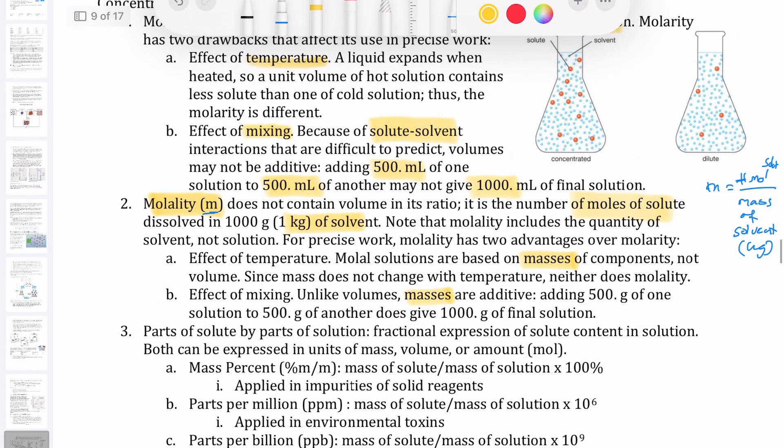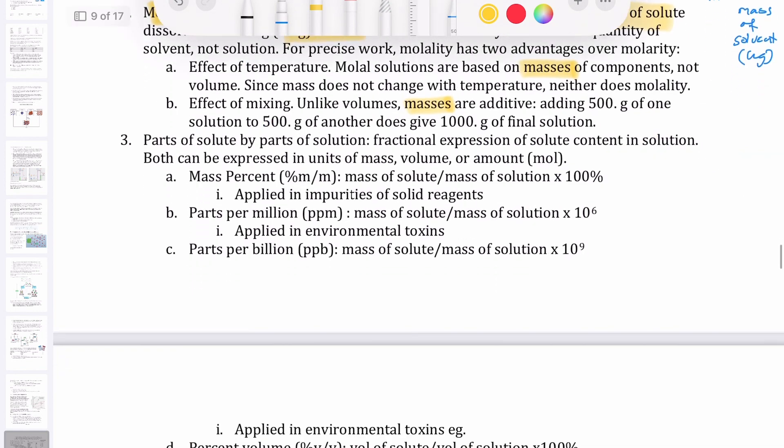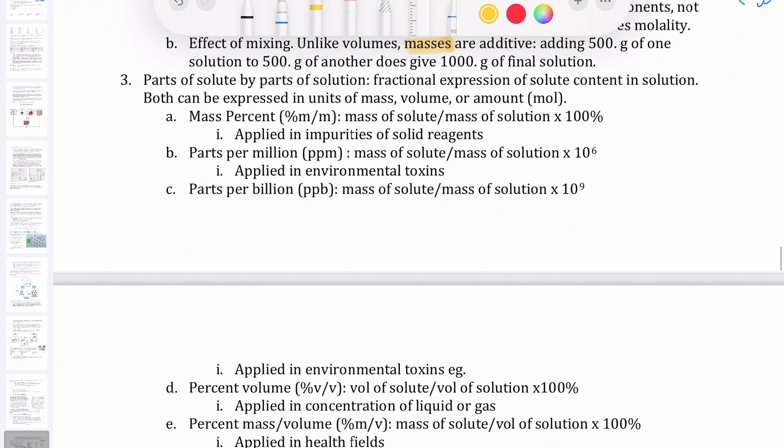So those are kind of the two that you'll see being used in the colligative property discussion. We also have sort of a more practical measures of concentration, and these are what we call parts of solute by parts of solution. So this is basically measuring how much solute per solution, and this is expressed in either percentage, that's a common one,